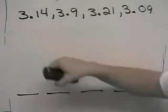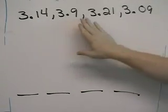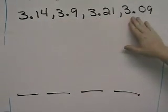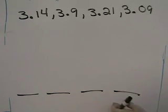What we're going to do here is we're going to take these four decimals, 3.14, 3.9, 3.21, and 3.09, and we're going to organize them from least to greatest down here.